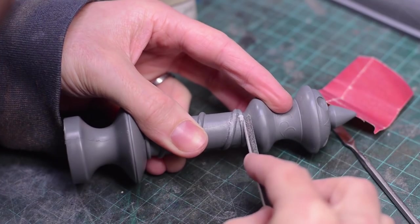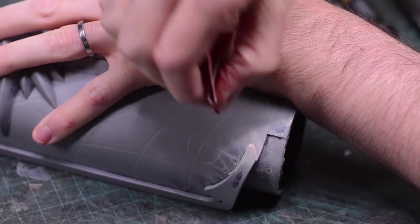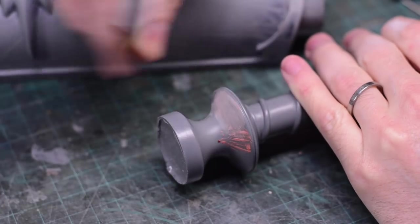No matter how you filled in your bubbles, once the filler is dried or cured you can smooth it flush using your files, sanding sticks and sanding paper.